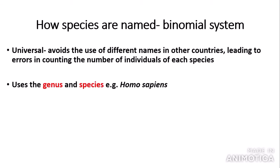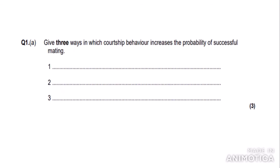Species are named scientifically using the binomial system. The binomial system is universal, so it avoids the use of different names in other countries — which can otherwise lead to errors in estimating the number of individuals of each species. The binomial system uses the genus and species of the organism, for example Homo sapiens. It is incredibly important that you write the genus with a capital letter and the species name (e.g. sapiens) with a lowercase letter. When typing the binomial name, it should also be in italics.